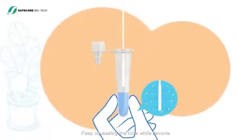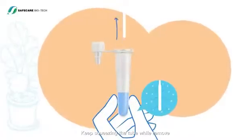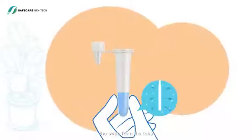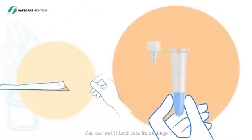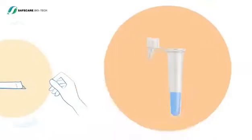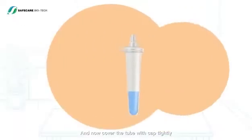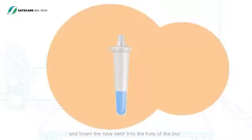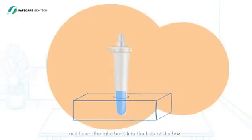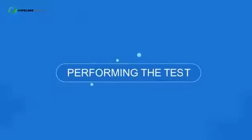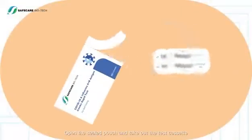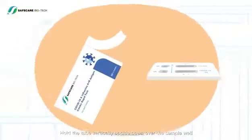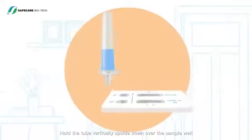Keep squeezing the tube while removing the swab. Dispose of the swab — you can put it back into its package. Now cover the tube with the cap tightly and insert the tube back into the hole of the box. Performing the test: open the sealed pouch and take out the test cassette. Hold the tube vertically upside down over the sample well.